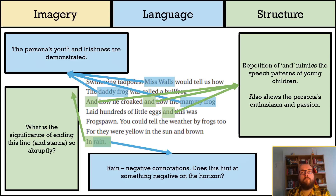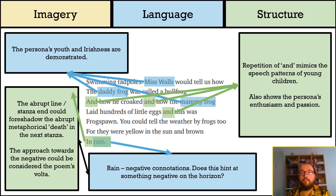Rain generally has negative connotations. Through mentioning it, Heaney could be hinting at something negative on the poem's horizon. The abrupt ending of the line and stanza — the bottom line 'in rain' is considerably shorter than the rest of the poem — could foreshadow the sudden metaphorical death that is in the next stanza. This abrupt ending combined with the negative connotations means that this line could be considered the poem's volta.